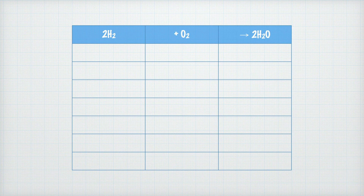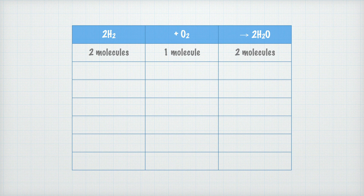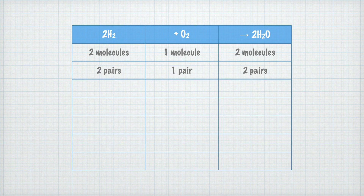Let's write a table where we put the chemical equation in the header. The equation says that if we have two molecules of hydrogen, they react with one molecule of oxygen to form two molecules of water. The quantity ratio also tells us that two pairs of hydrogen molecules react with one pair of oxygen molecules to form two pairs of water molecules. The same reasoning applies with dozens: if two dozen hydrogen molecules react, one dozen oxygen molecules are needed to form two dozen water molecules.